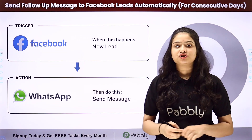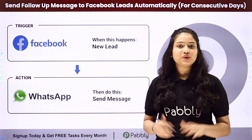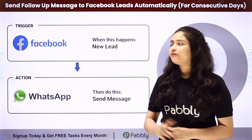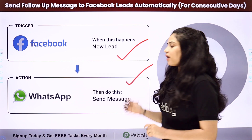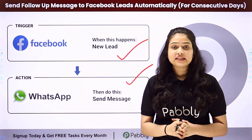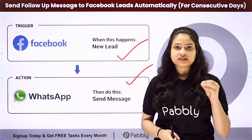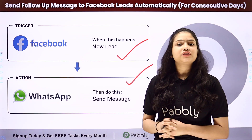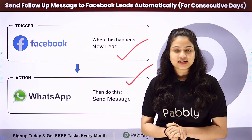For this, we will have to integrate both these applications, and we are going to do that without any coding or programming skills with the help of Pabbly Connect. Here we have Facebook lead ads in our trigger, and in action I'm going to take Wati, with the help of which I'm going to send WhatsApp messages to my leads. You can also use any other application such as Interact or AISNC. We are going to connect both of them using Pabbly Connect to automate this entire process.